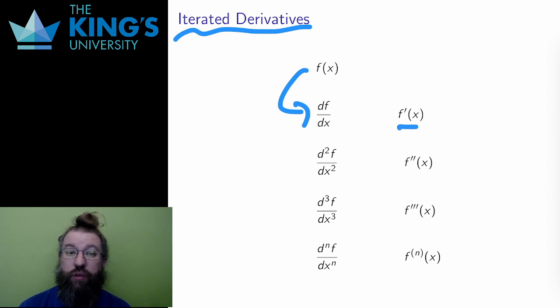The derivative of position is velocity, which measures how position changes. This operation can be iterated. The output is a function, so I can ask for the rate of change of this new function as well.